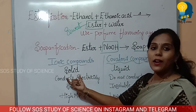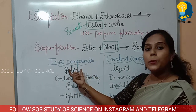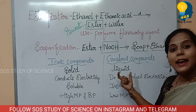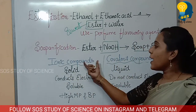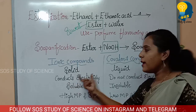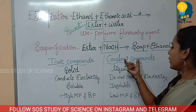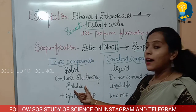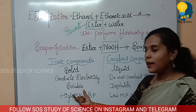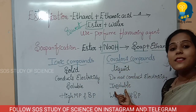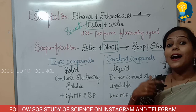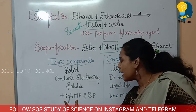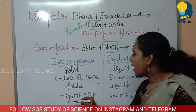Ionic compounds are solid, whereas covalent compounds are liquid. Next, ionic compounds conduct electricity; covalent compounds do not conduct electricity. Next, ionic compounds are soluble; covalent compounds are insoluble.